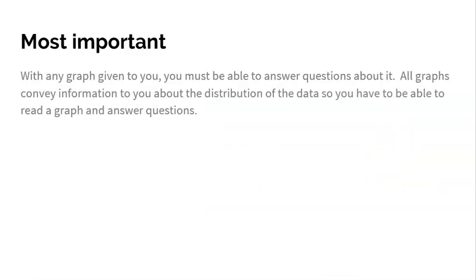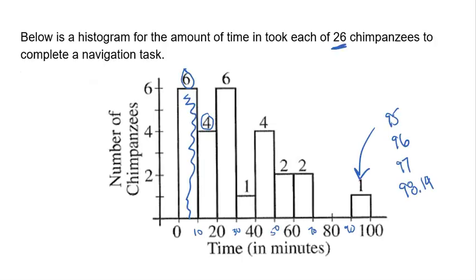What's most important is that with any graph given to you, you got to be able to answer questions about it. All graphs convey information to you about the distribution of the data. You have to be able to read a graph and answer questions. If we go back to this graph right here, I'd expect you to be able to say the distribution shows that the chimps were anywhere from zero to 100 minutes, but it looks like most chimps were around 10 to 50 minutes for most chimps to finish it. That's kind of what's common. Be able to answer questions. If I said what percentage of chimps took over 40 minutes? Well, that's an easy question.